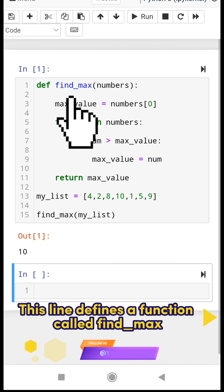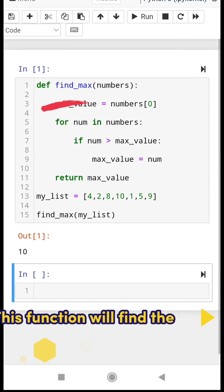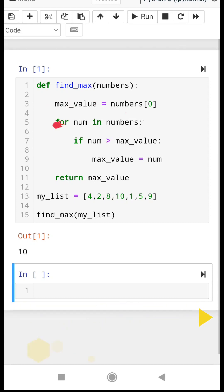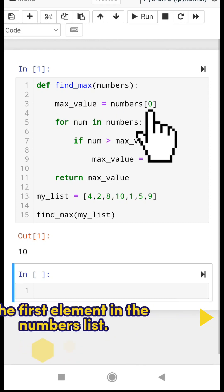This line defines a function called find_max that takes a single parameter called numbers. This function will find the maximum value in a list of numbers. This line initializes a variable called max_value to the first element in the numbers list.